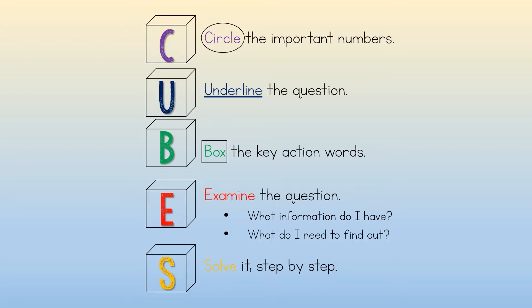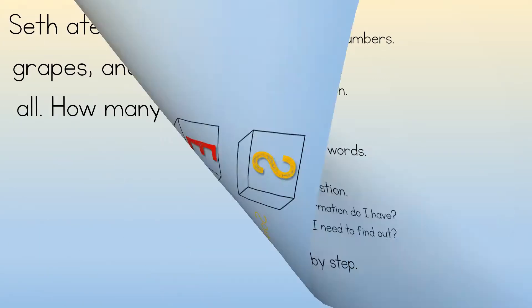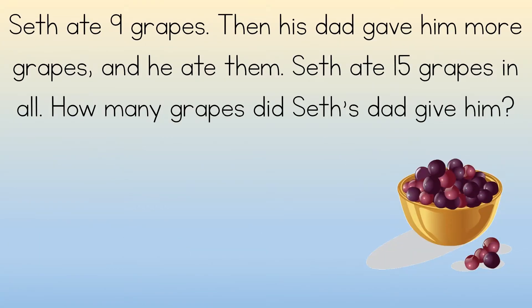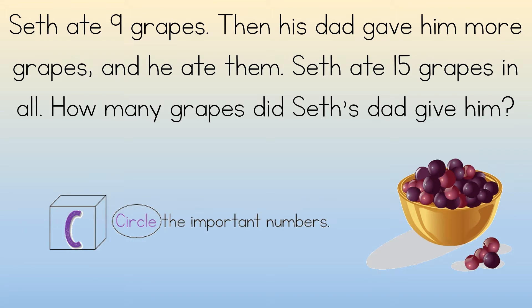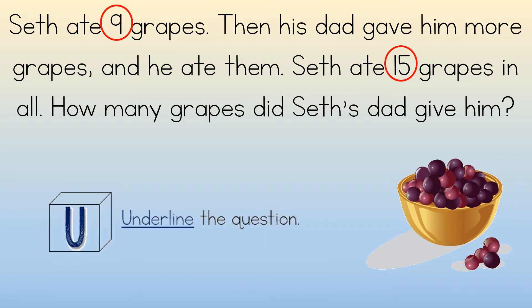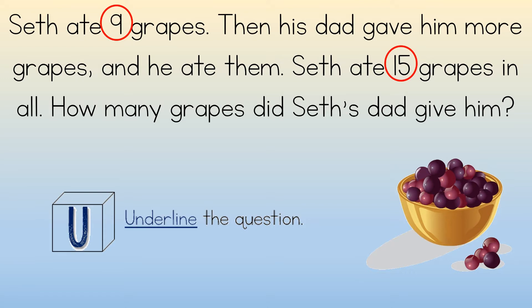Let's take a look. Remember: Seth ate nine grapes, then his dad gave him more grapes and he ate them. Seth ate 15 grapes in all. How many grapes did Seth's dad give him? Step one in the CUBES model is circle. What are the important numbers to circle in this word problem? Circle them in your math book. You should circle nine and fifteen.